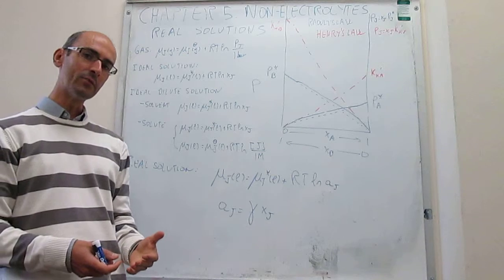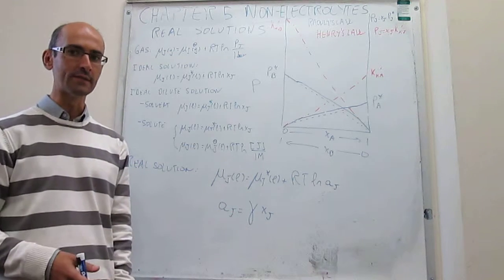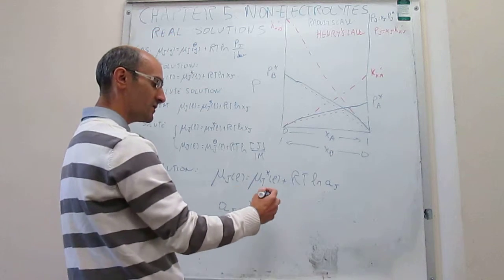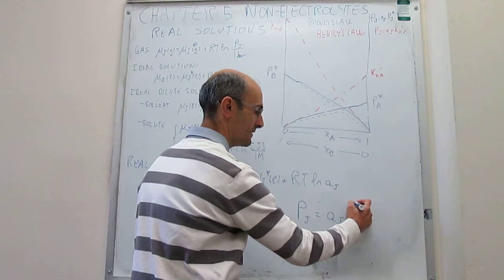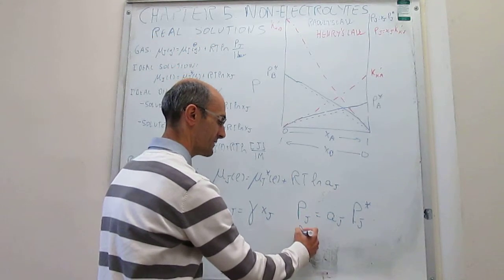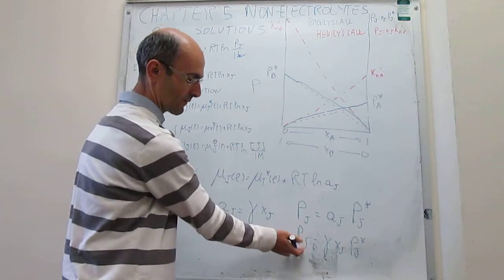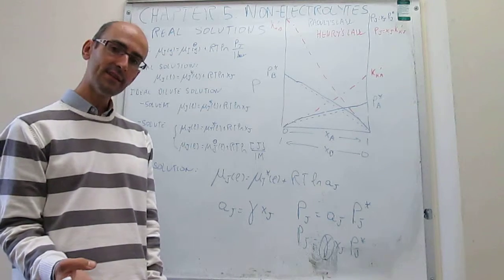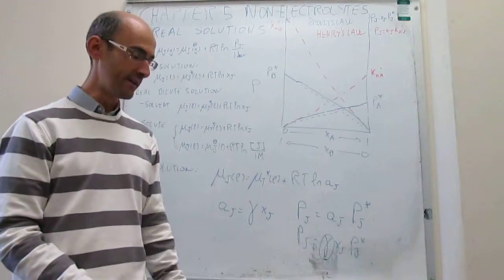This way to proceed using activities and activity coefficients is entirely general — you can apply this to any expression from the ones we have seen in this chapter. For example, if you have Raoult's Law, the pressure of component J would be equal to the activity of component J times the pressure of J when pure. You can rewrite this as P_J = γ · x_J · P*_J. This is Raoult's Law expressed in terms of activity, where the activity coefficient γ tells you how far away you are from the ideal case — values like 1.05, 1.1, 0.85, or 0.9.